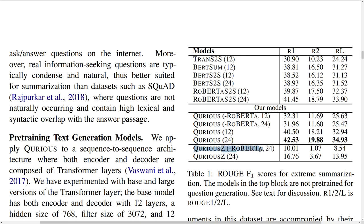They also have results for zero-shot summarization, where they basically don't fine-tune but just take the question generation model directly. Performance is lower, but it's interesting to see what happens — you can get some question that is related to the input article.